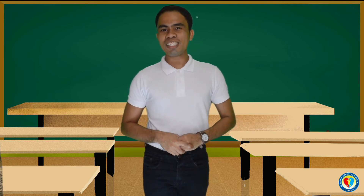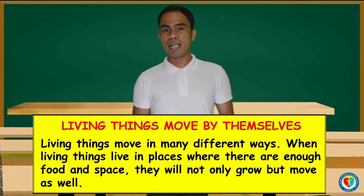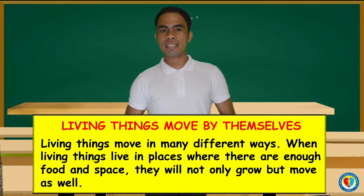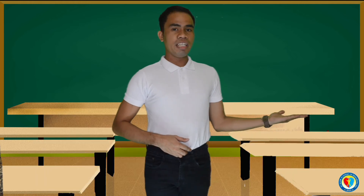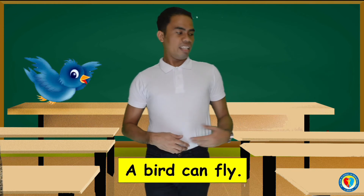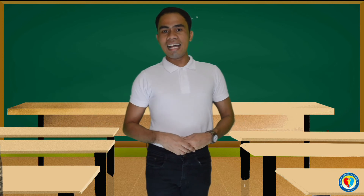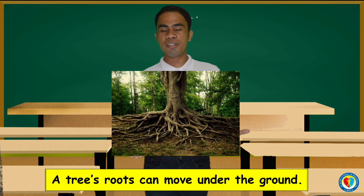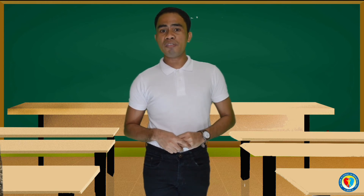Let us learn about the fourth characteristic of living things. Living things move by themselves. Living things move in many different ways. When living things live in places where there are enough food and space, they will not only grow but move as well. For example: children can run, a bird can fly, a fish can swim, a snake can crawl, and a tree's roots can move under the ground.